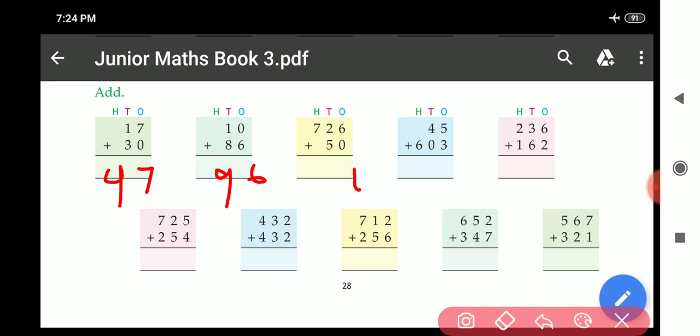6 plus 0, 6. 5 plus 2, 7. And here also 7. Answer is 7, 7, 6. Now come to third part.